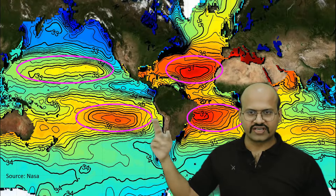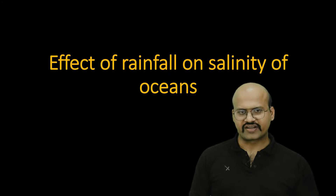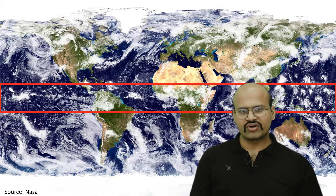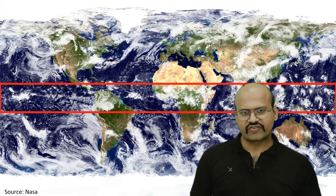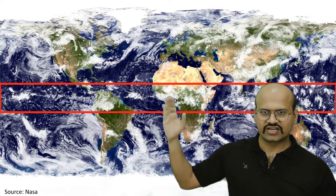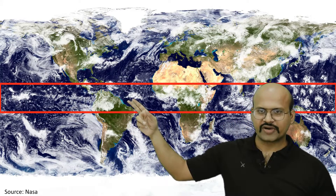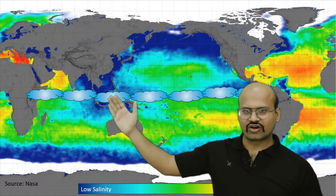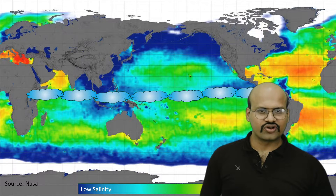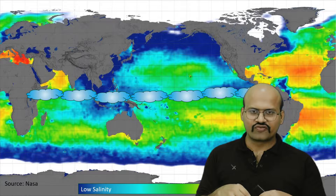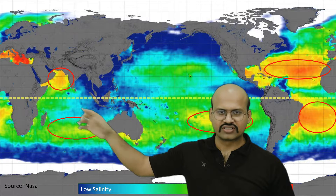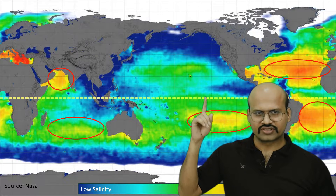The second factor affecting salinity is rainfall. In the equatorial region, a large amount of rainfall occurs — we can see significant cloud cover in the equatorial region compared to the tropical regions. Therefore there is large amount of rainfall along the equatorial region, and a lot of fresh water from rainfall is added to the oceans, reducing the salinity in this region.